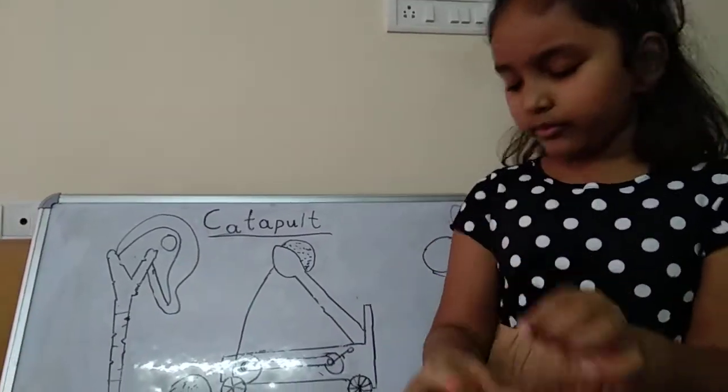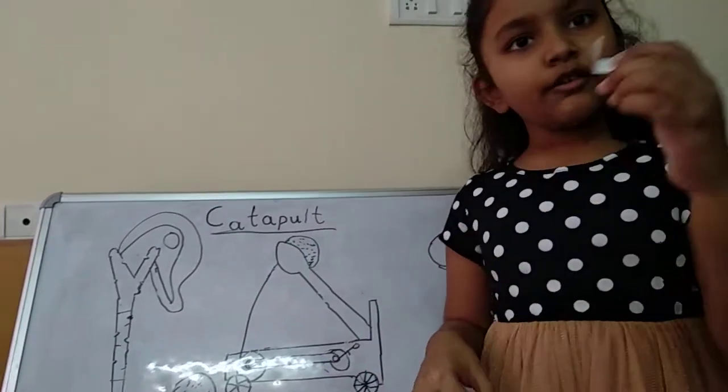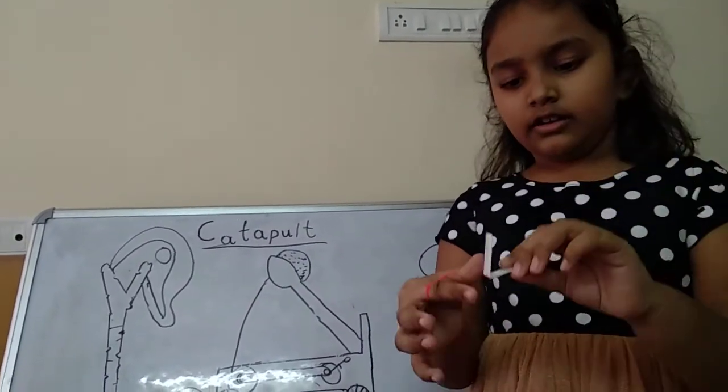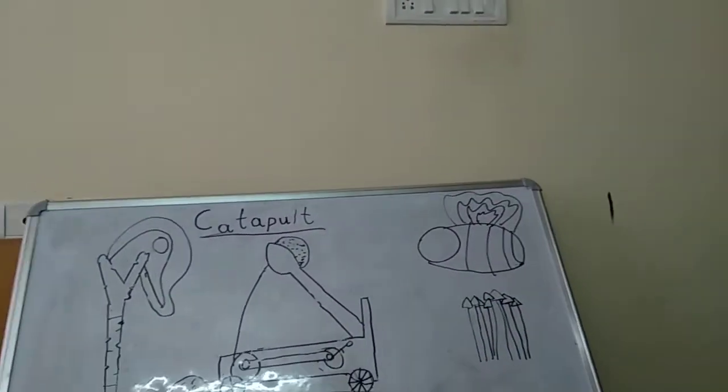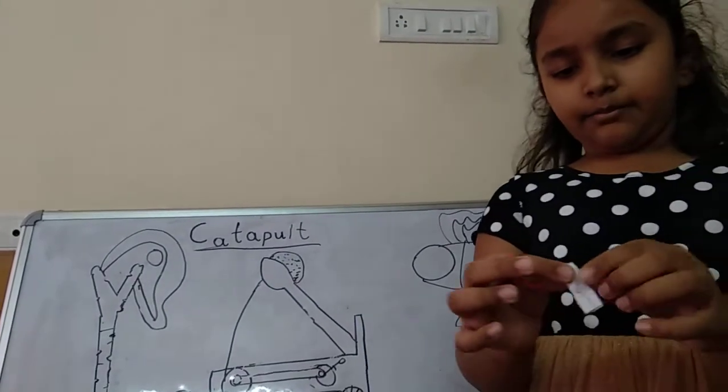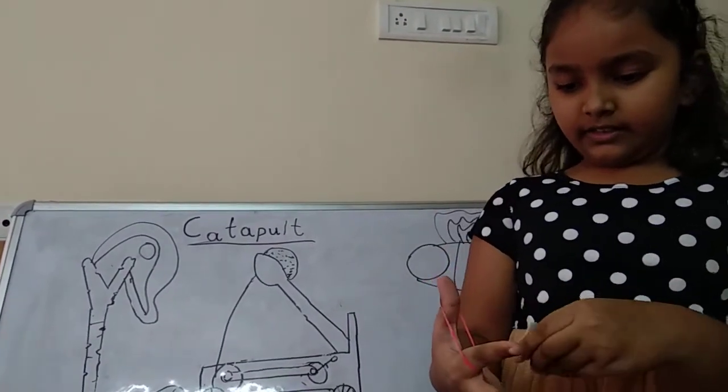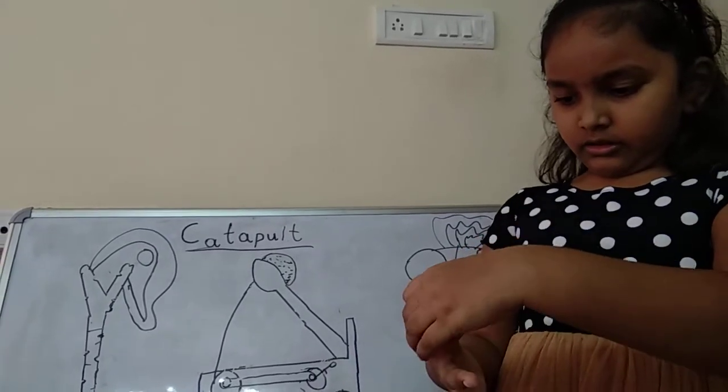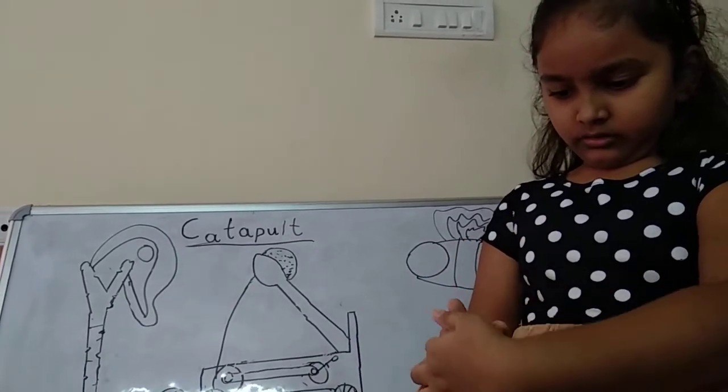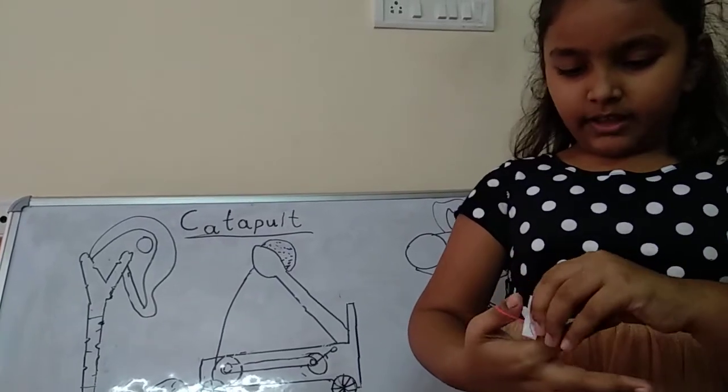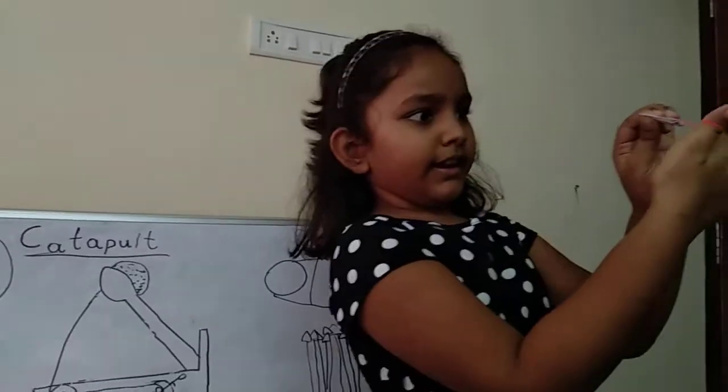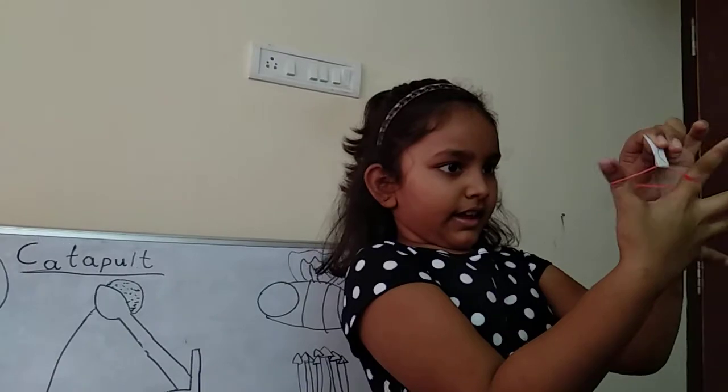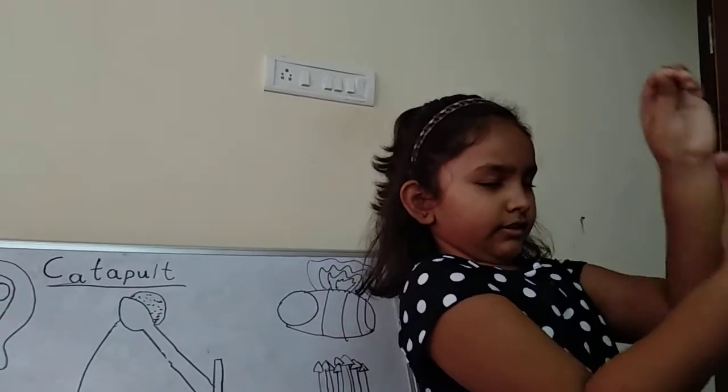If you are done doing that, take the paper and fold it small this way. When it's folded, you take it and put it like this onto your catapult's base. When that's done, we can shoot it as far as we want.